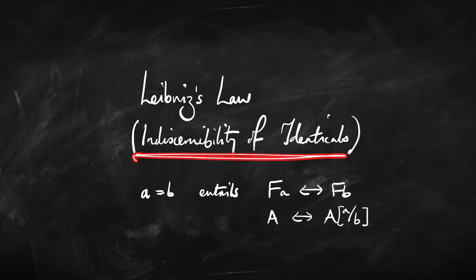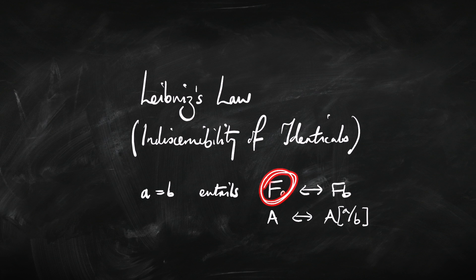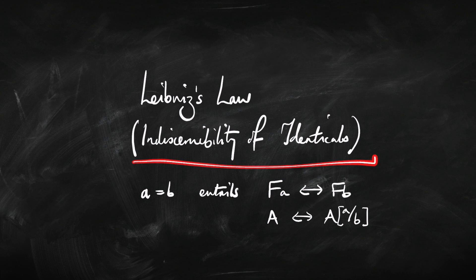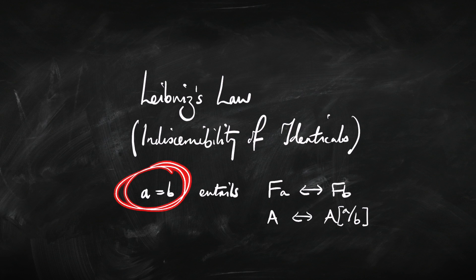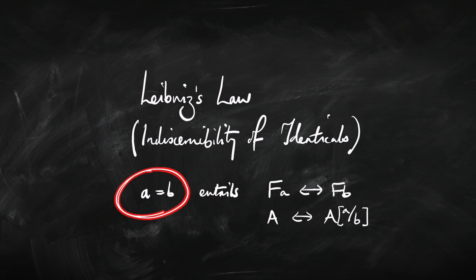You might also hear of the converse of this principle: the identity of indiscernibles. That's a different principle — it says that if A and B have all the same properties, then they're going to be identical. Depending on exactly what we mean by a property, if we think of properties as just the things we express with primitive one-place predicates, it won't be valid. It might be that A and B have all the same properties, like being happy or being five foot tall, and yet they're different things. The identity of indiscernibles is typically controversial, but the indiscernibility of identicals — Leibniz's Law — is valid in logic and is a really important substitution principle.